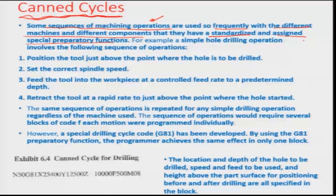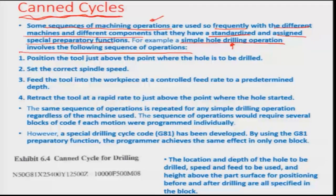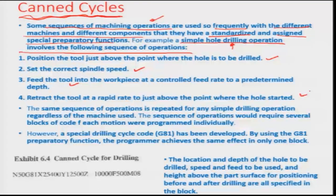For example, consider a simple hole drilling operation. The sequence involves: first, positioning the tool just above the point where the hole is to be drilled; then setting the correct spindle speed; then feeding the tool into the workpiece at a controlled feed rate to a predetermined depth; and finally, retracting the tool at a rapid rate to just above the point where the hole started. These four commands — position the tool, set the speed, rotate the spindle, start feeding, and then retract — are implemented in sequence for any drilling process.